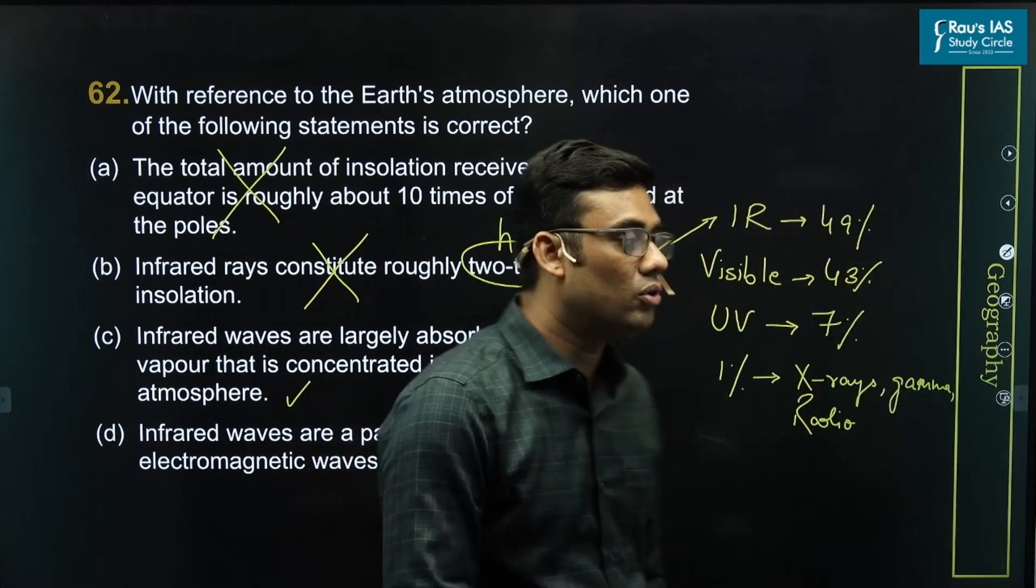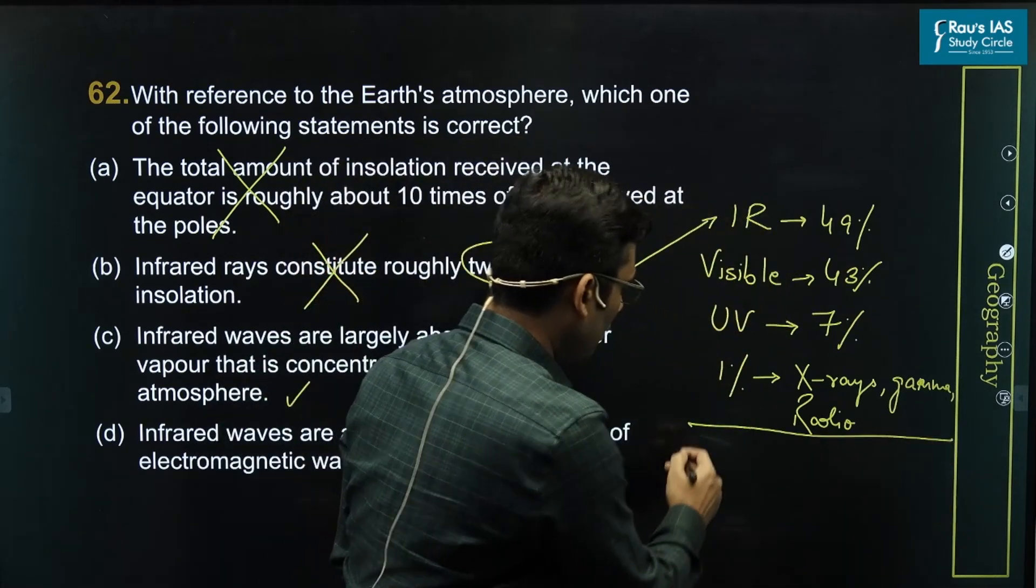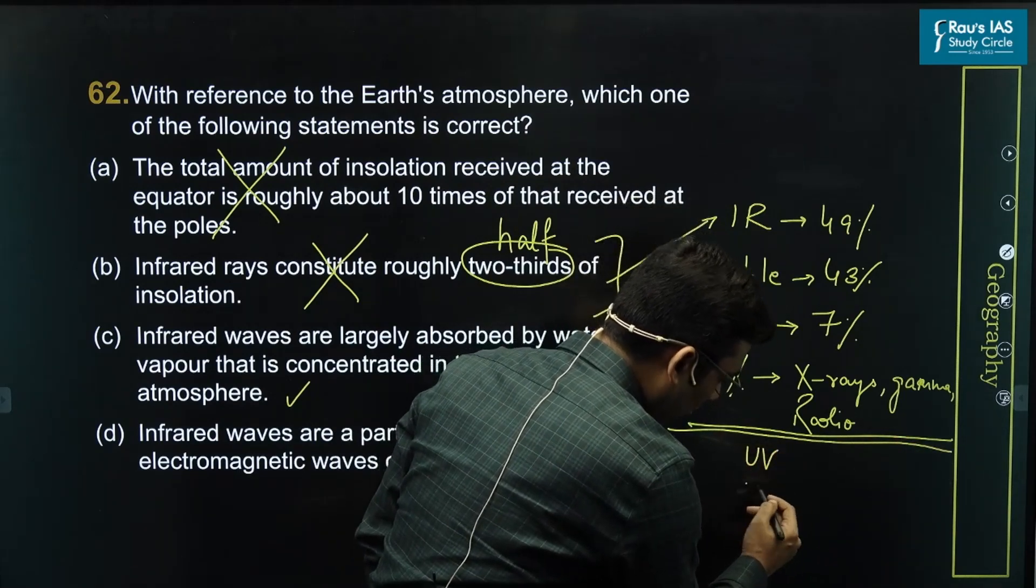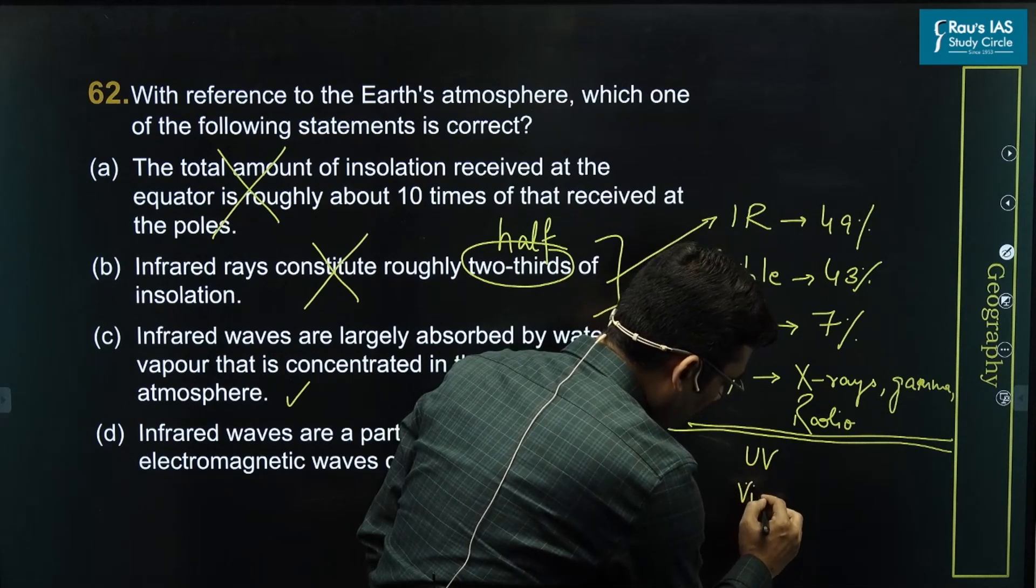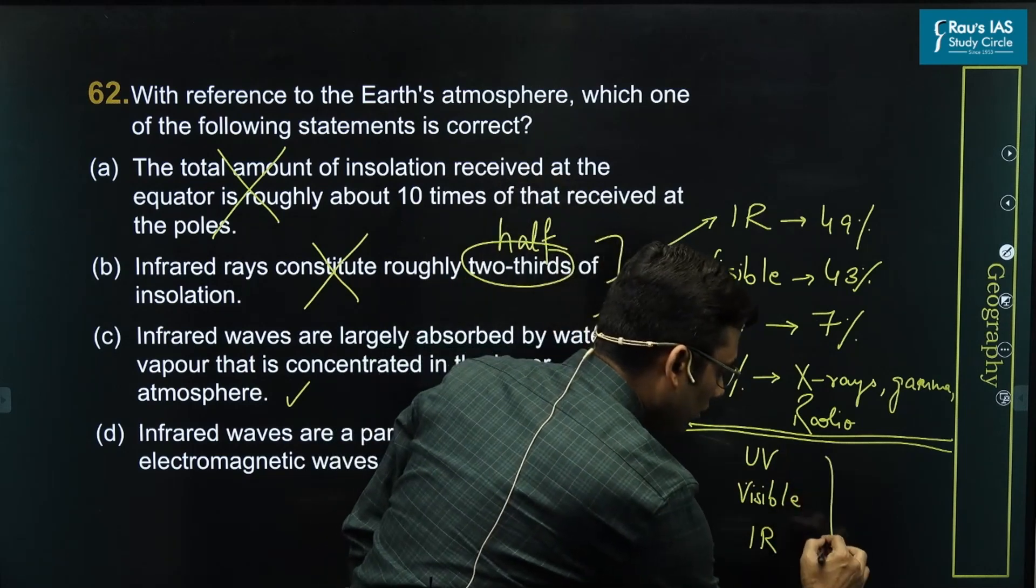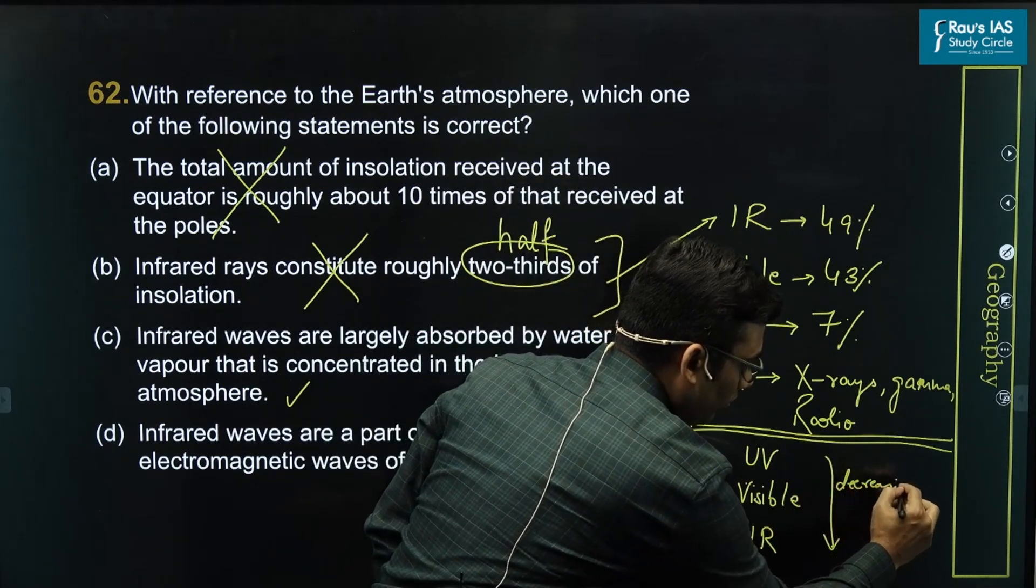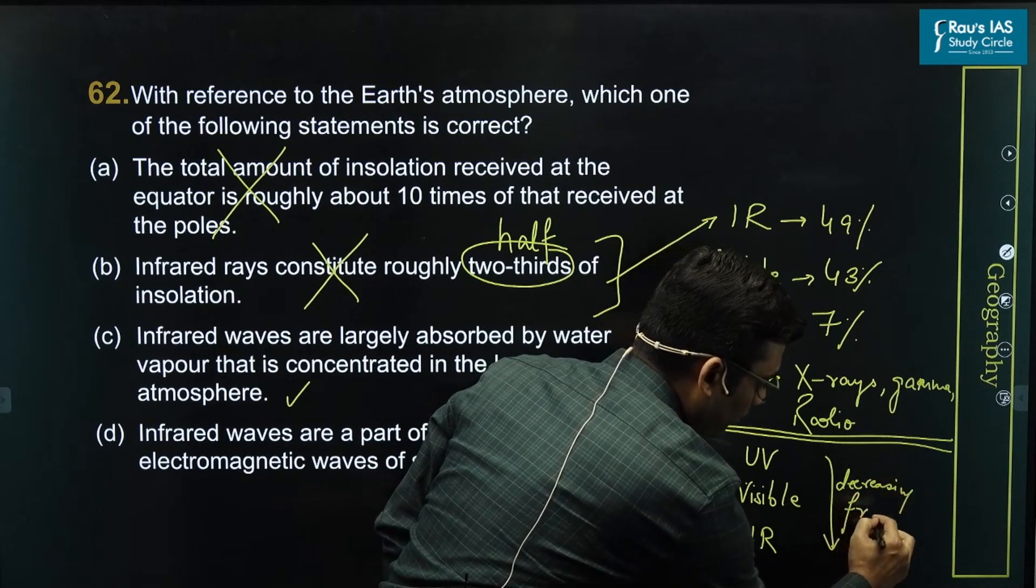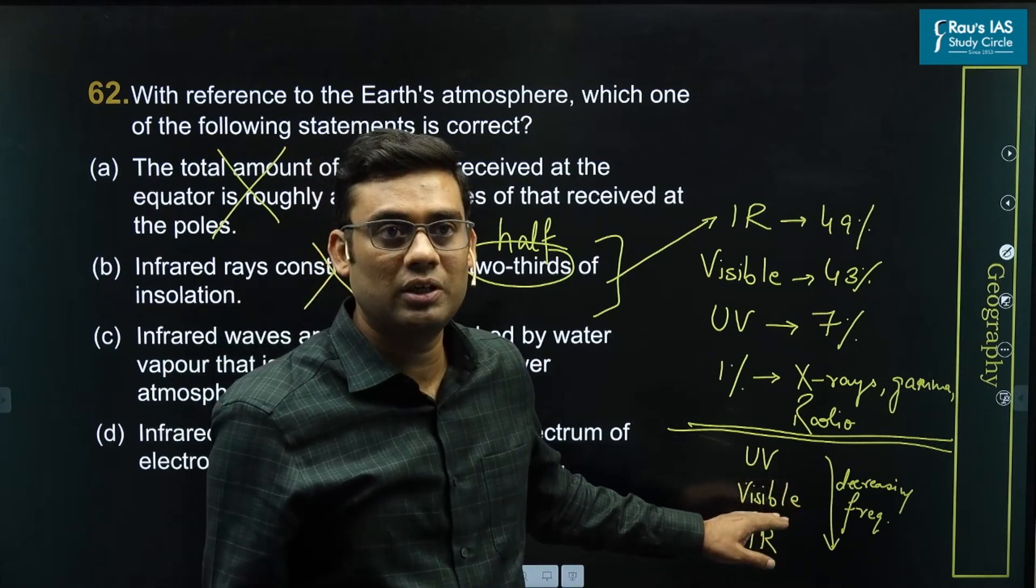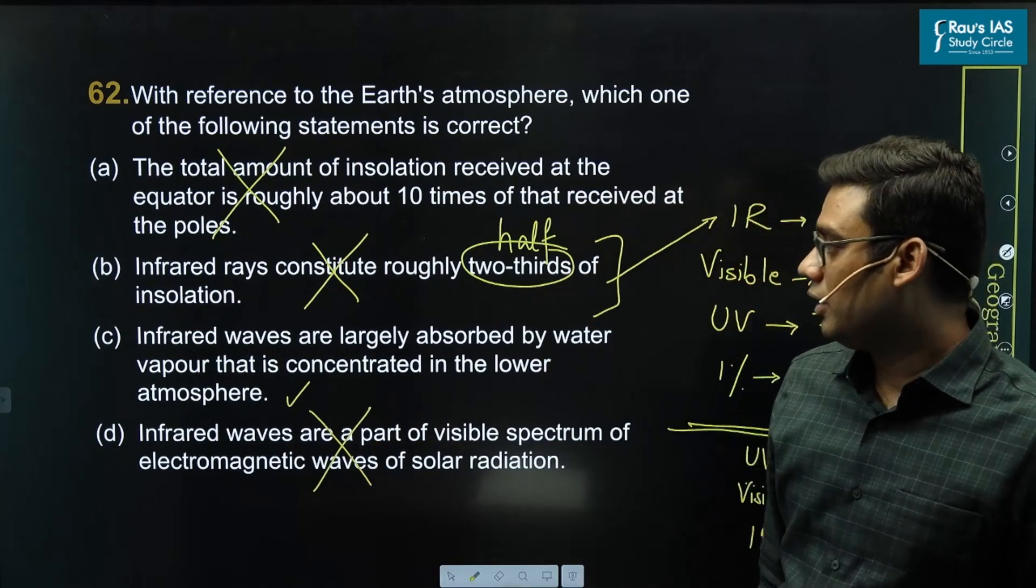If we see the complete solar spectrum, it looks like ultraviolet, then based on frequency we have visible, and then we have infrared which is decreasing frequency. So the infrared waves definitely are different from visible spectrum, which makes this statement incorrect.